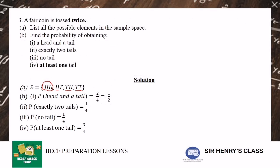Then number 3. A fair coin is tossed twice. List all the possible elements in the sample space and find the probability of obtaining a head and a tail, exactly two tails, no tail and at least one tail.